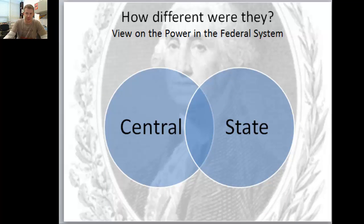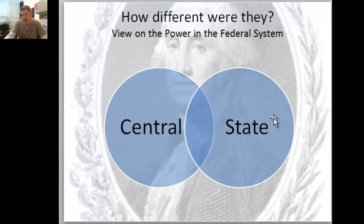Their view on the federal system - I'm just going to move these circles around a little bit. So this is federalism: where we have a central or federal government and we have a state government. The central government has its powers, state government has its powers, and there are some that would overlap, like for example the power of tax.